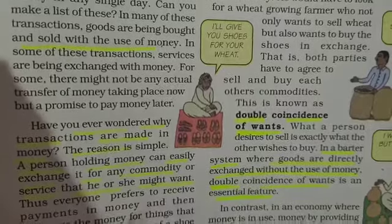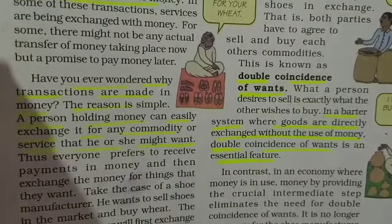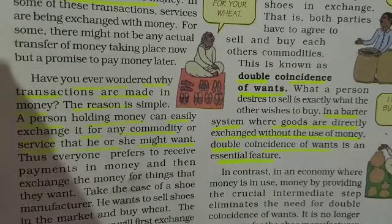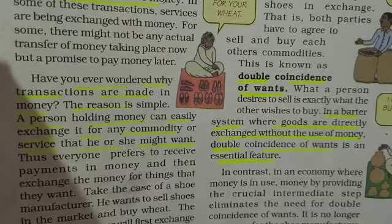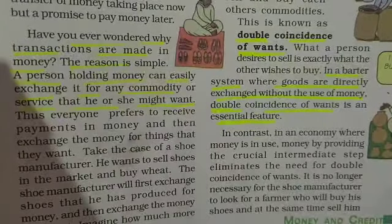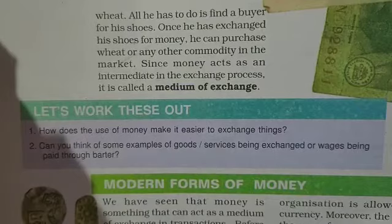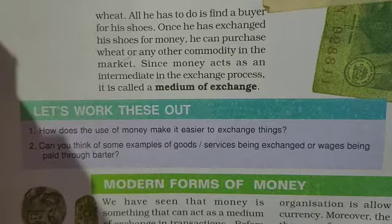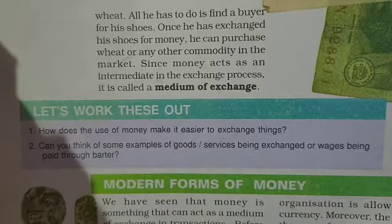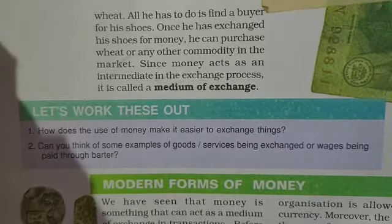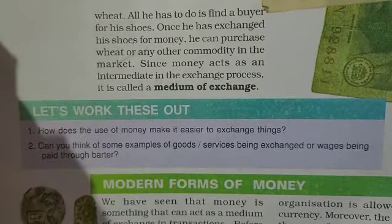In contrast, in an economy where money is in use, money provides a crucial intermediate step. The need for double coincidence of wants is no longer necessary. The shoe manufacturer no longer needs to find a farmer who will buy his shoes and at the same time sell him wheat. He only has to find a buyer for his shoes. Once he has exchanged the shoes for money, he can purchase wheat or any other commodity in the market.